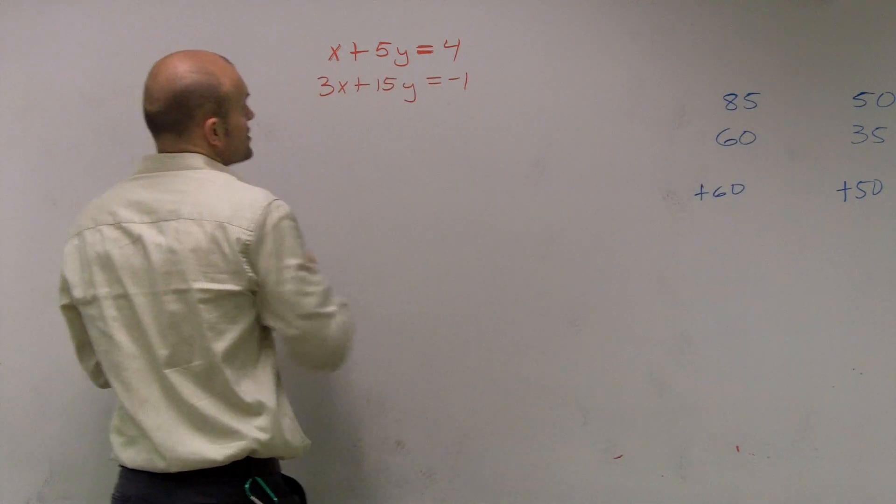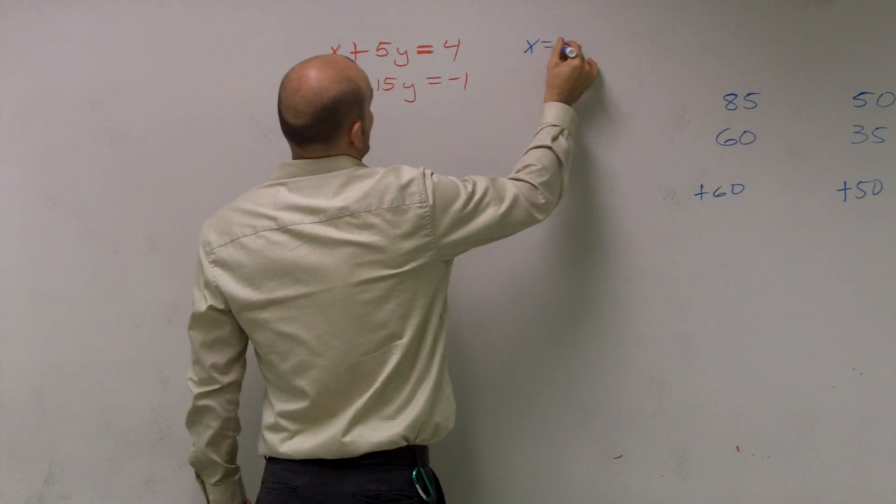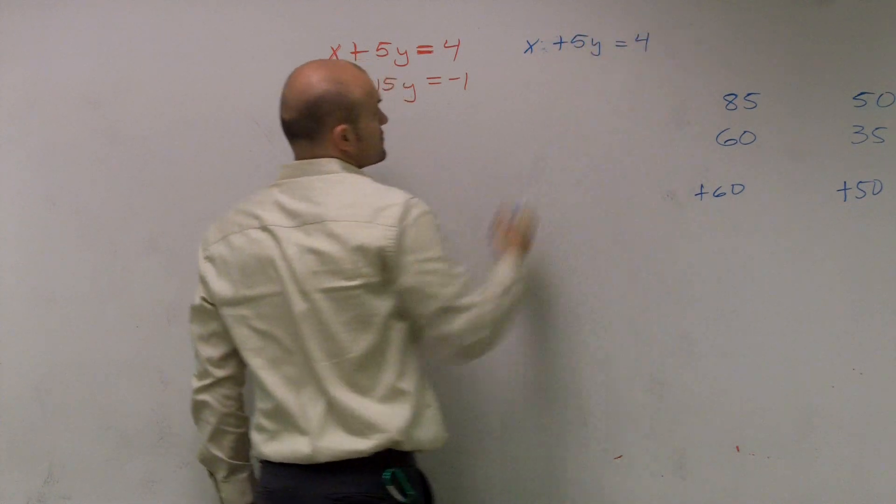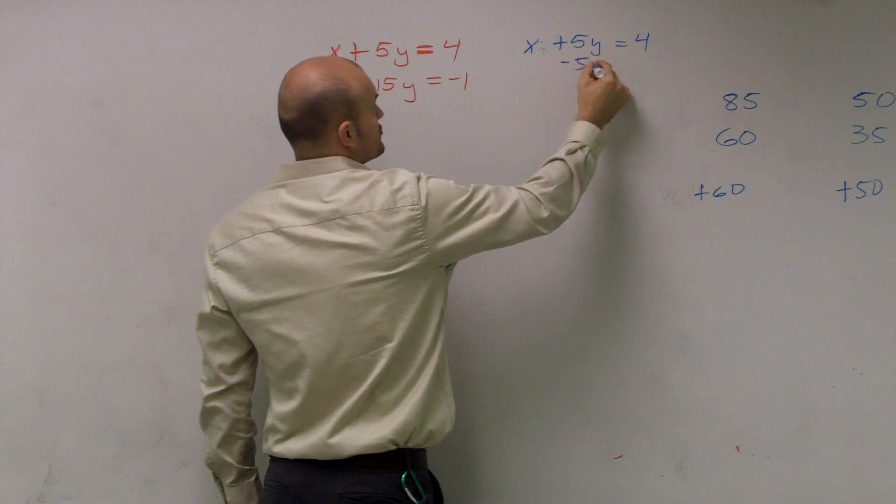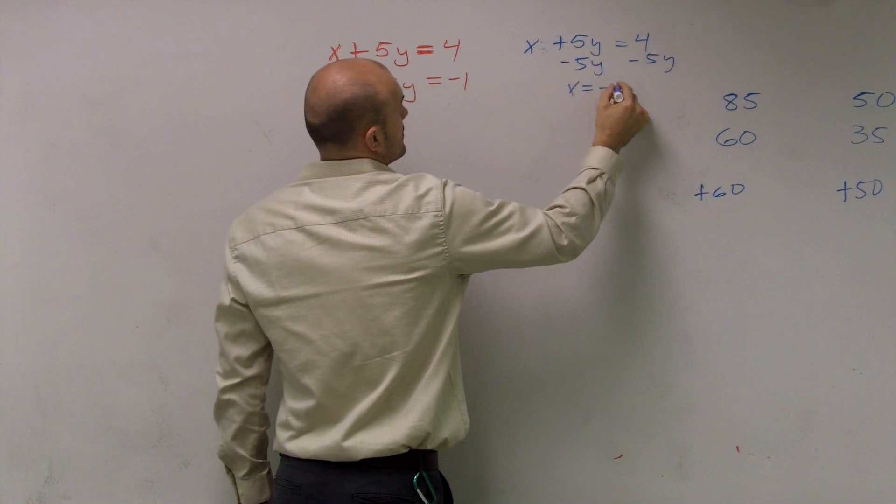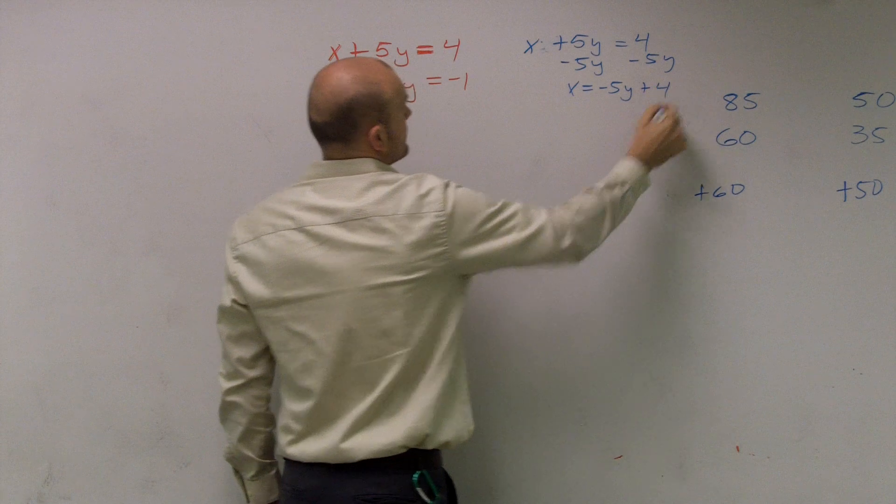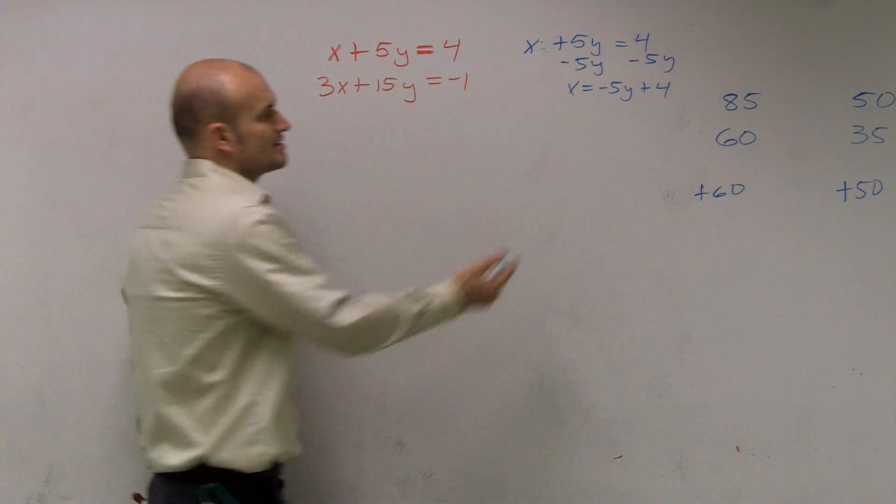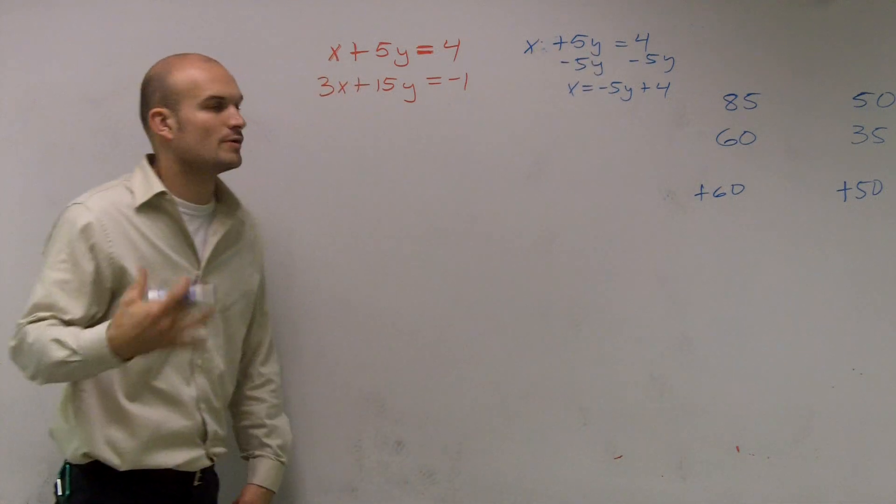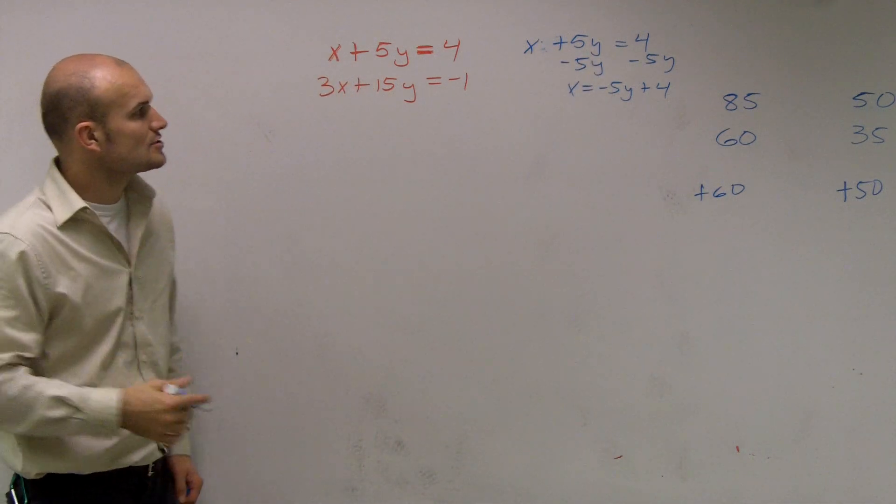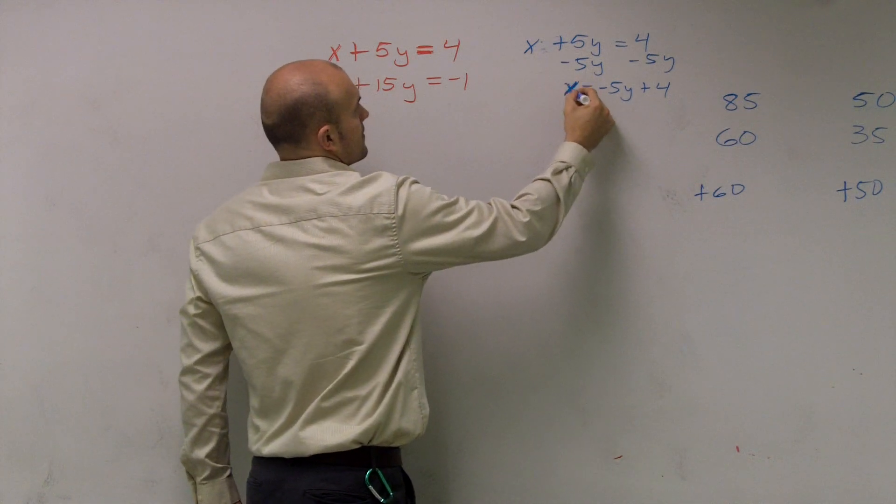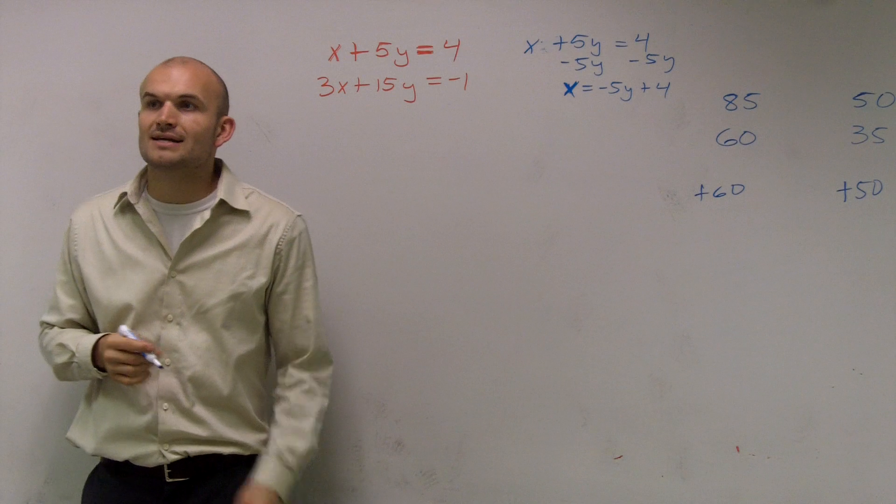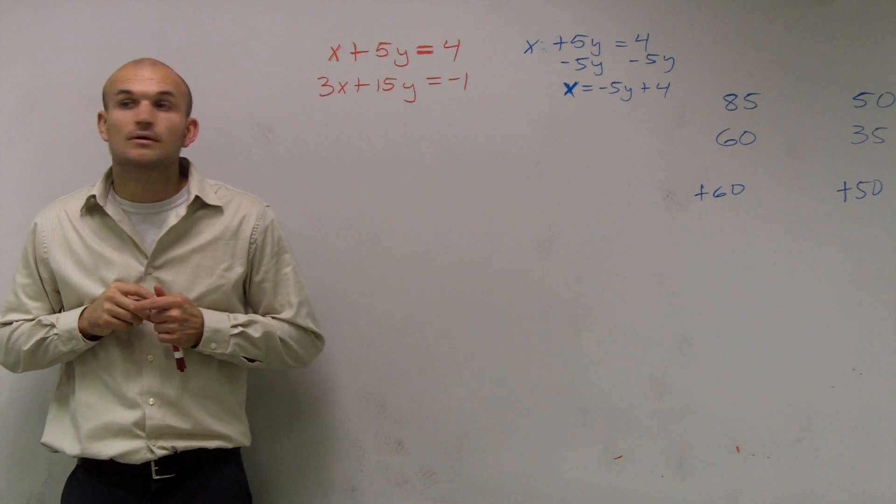So, if I want to do this problem, if I want to solve for x, x plus 5y equals 4. To solve for x, I subtract 5y. So, therefore, I have x equals negative 5y plus 4, or whatever. It doesn't matter, 4 minus 5y, however you want to write it. So, now, what you guys have is you have x equals negative 5y plus 4.